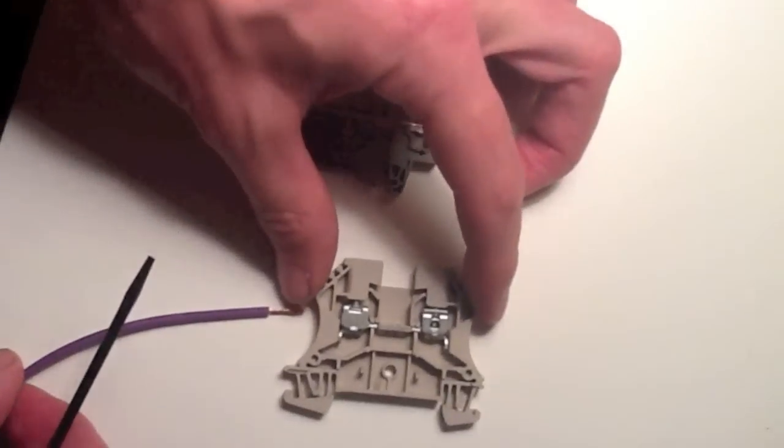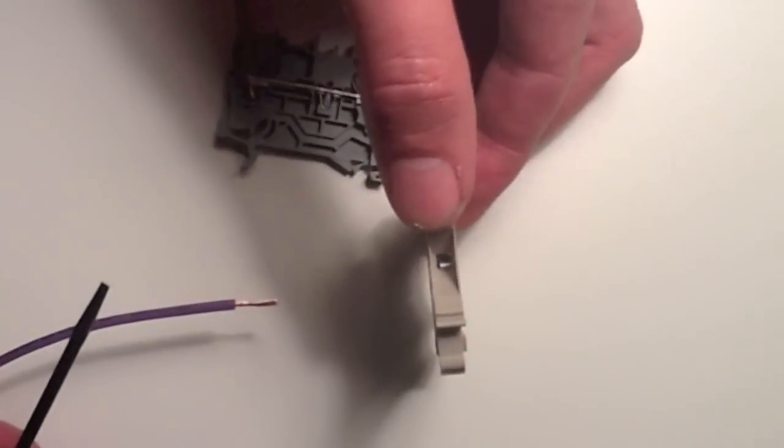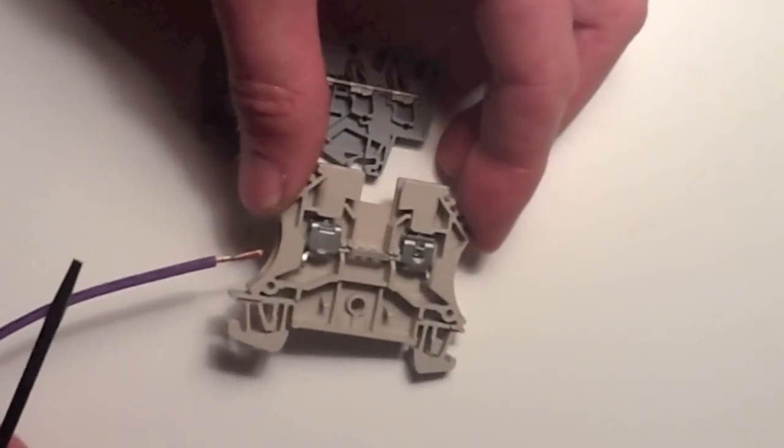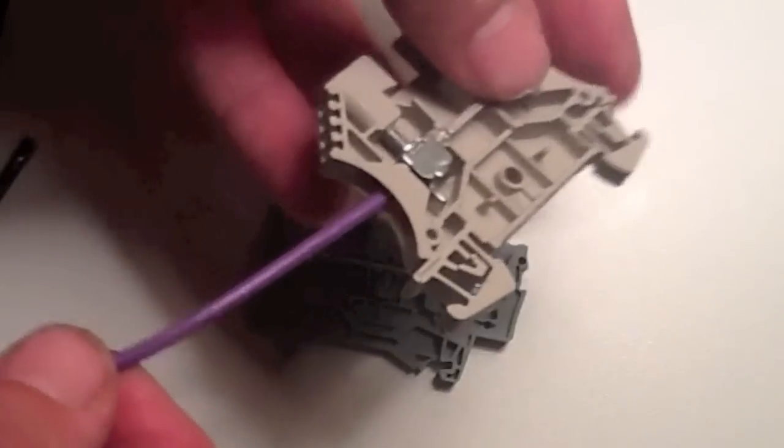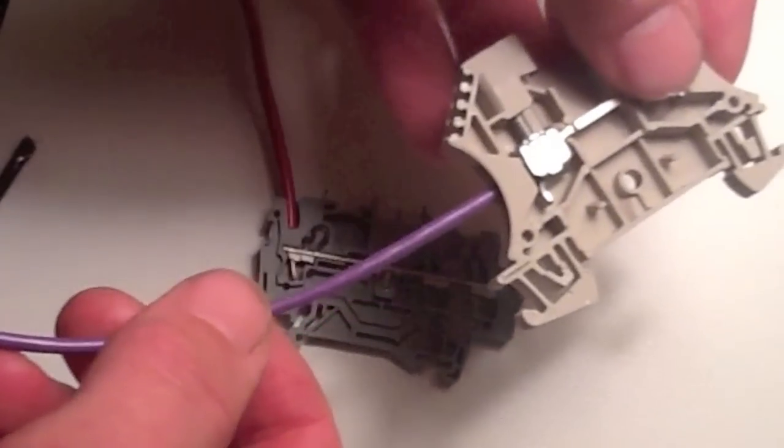In a standard terminal block you have a screw that will compress the wire against the bus bar. Aside from taking longer to secure,